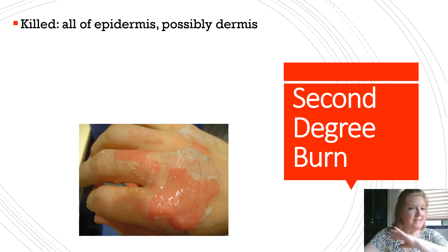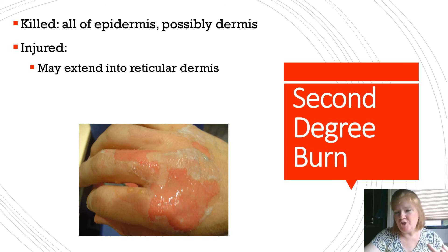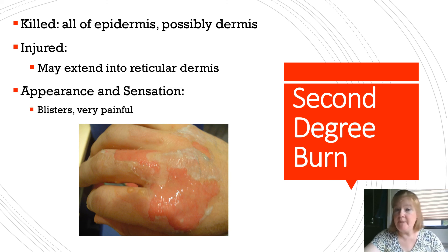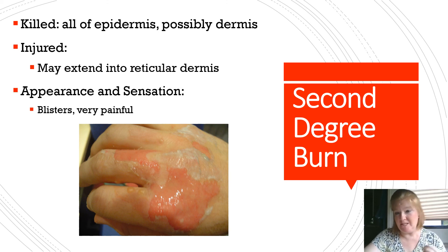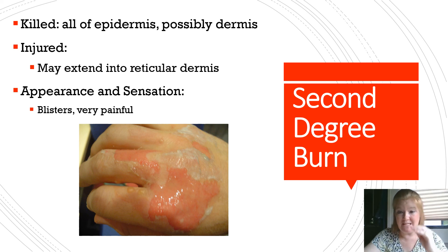A second degree burn kills all of the epidermis and possibly the dermis. The injury may extend into the reticular dermis — the deeper layers. The appearance and sensation include blisters and it is very painful. So: first degree — no blisters; second degree — blisters and extends deeper into the dermis.